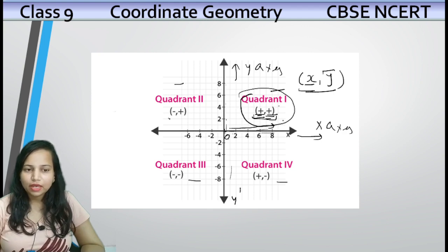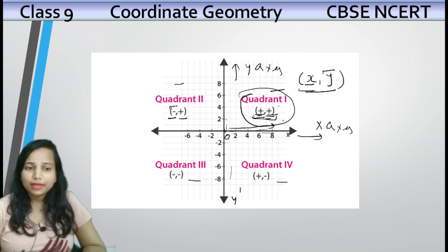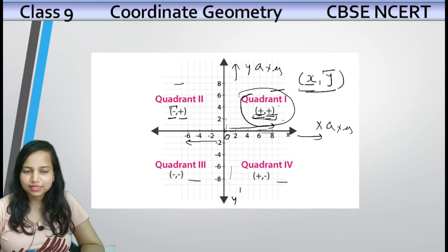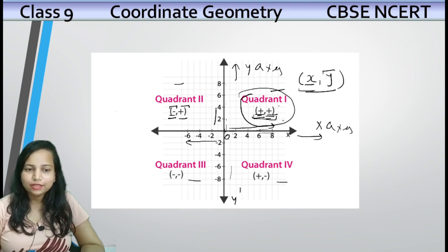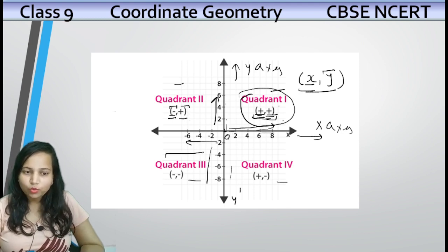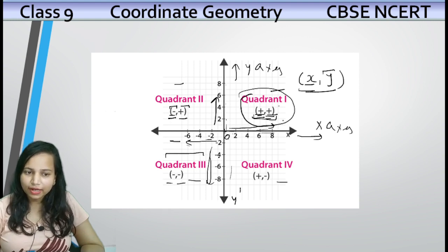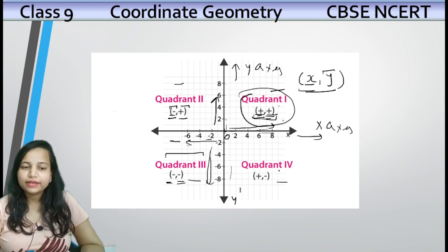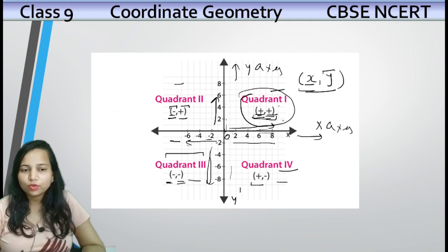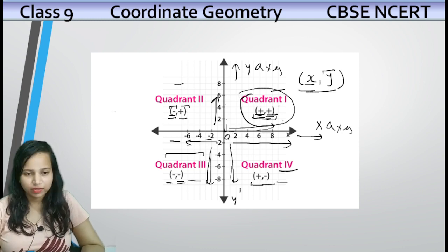Second quadrant mein negative and positive likha hua hai. X-axis ki is side ke points minus mein hain — toh negative hote hain x-axis ke — aur y ke coordinates plus hain. Isliye minus and plus second quadrant. Quadrant 3 mein dono negative hain — negative wali x-axis aur negative wali y-axis mein layi kar rahe hain. Quadrant 4 mein x-axis positive hai aur y-axis negative hai — toh quadrant 4 ke plus and minus hain.